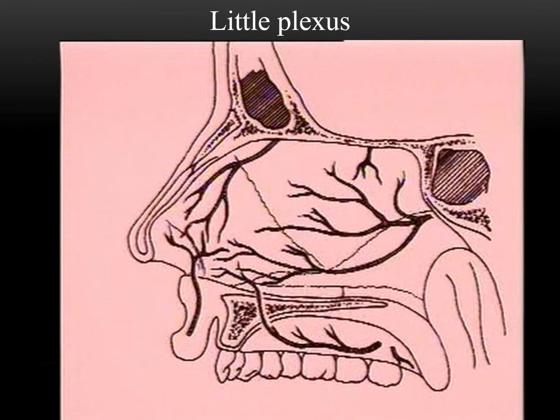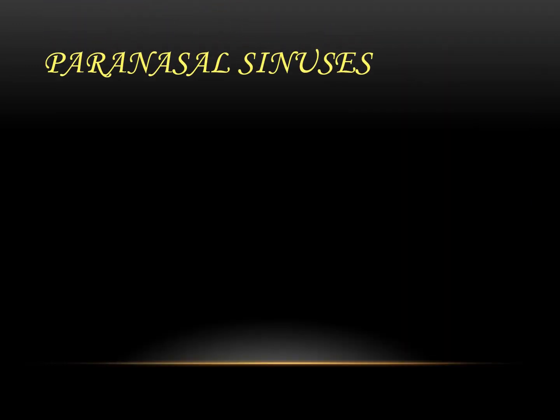Little's plexus is an area with a collection of multiple arteries supplying the nose at one point, with a rich blood supply that is liable to epistaxis. It can be seen at the anterior part of the nasal septum.